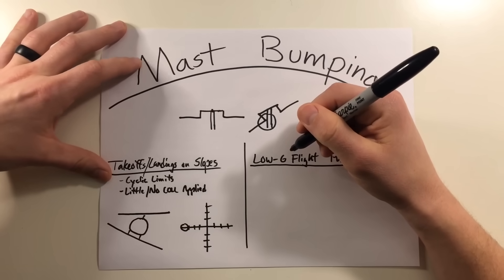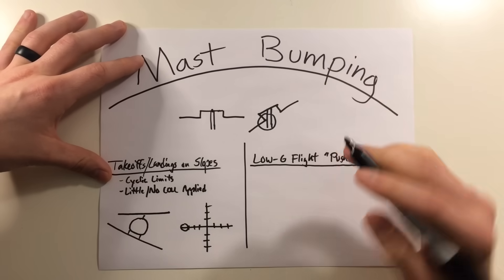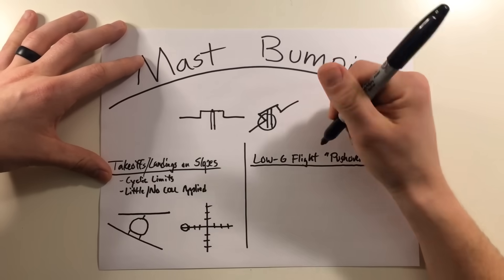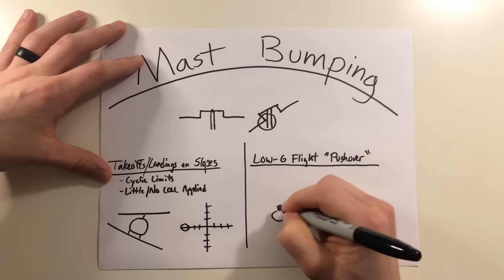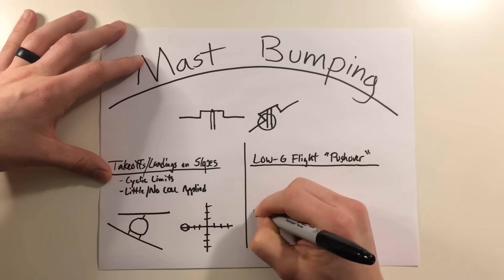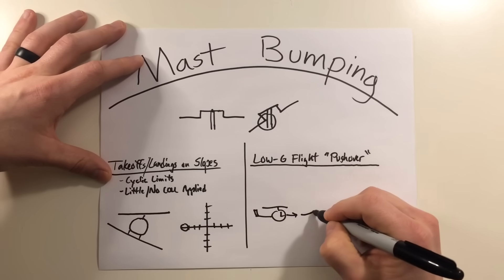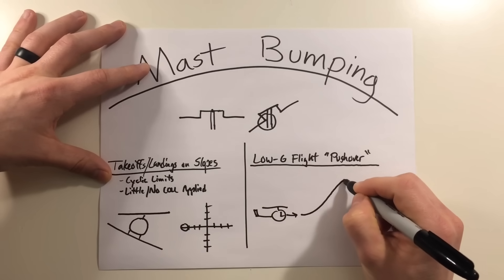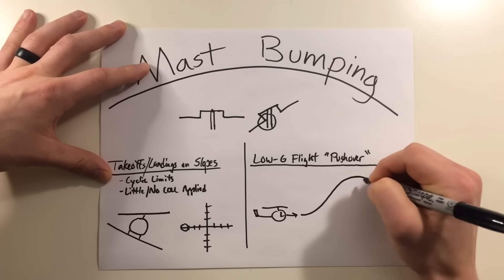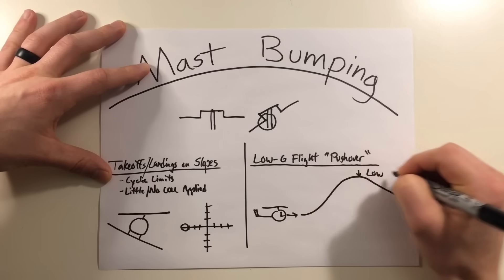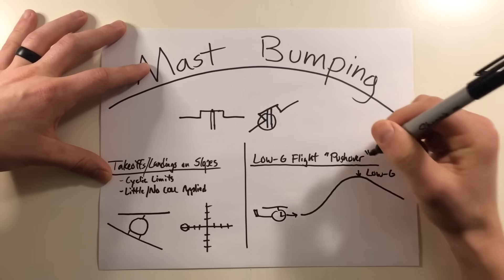Low G flight is usually accomplished via a pushover or leveling off or diving following a cyclic climb and it's going to look something like this. If your helicopter is flying along this way, the helicopter initiates a cyclic climb, gets to the top and begins to give forward cyclic or level off and it's at this point right here where you're going to have a low G condition.